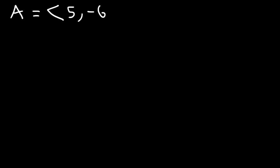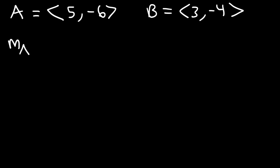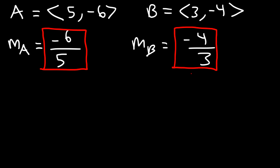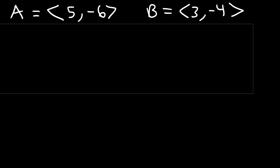Let's try one more example. Vector A is (5, -6) and vector B is (3, -4). Go ahead and work on that problem. Let's begin by analyzing the slope of each vector. For vector A, the slope is negative 6 over 5. For vector B, it's negative 4 over 3. Because the slopes are not equal, they can't be parallel. And because they're not negative reciprocals of each other, it's not orthogonal. Therefore, the two vectors are neither parallel nor orthogonal.